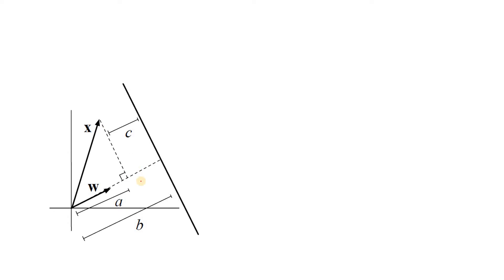This is the simple representation of a linear classifier. Everything above this linear classifier belongs to the positive class, and everything below this linear classifier belongs to the negative class. The perpendicular distance between the origin and our linear classifier is B.